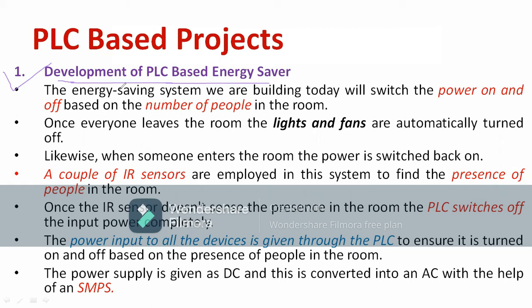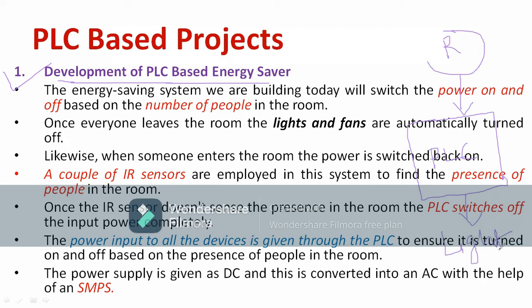An IR — infrared — sensor is used to identify whether occupancy is available or not. The IR sensor output will be connected to the PLC input, and the PLC output will be connected to the light and fan load. According to the availability of people, the IR sensor will activate and the PLC will turn on or turn off the output according to the input from the IR sensor.